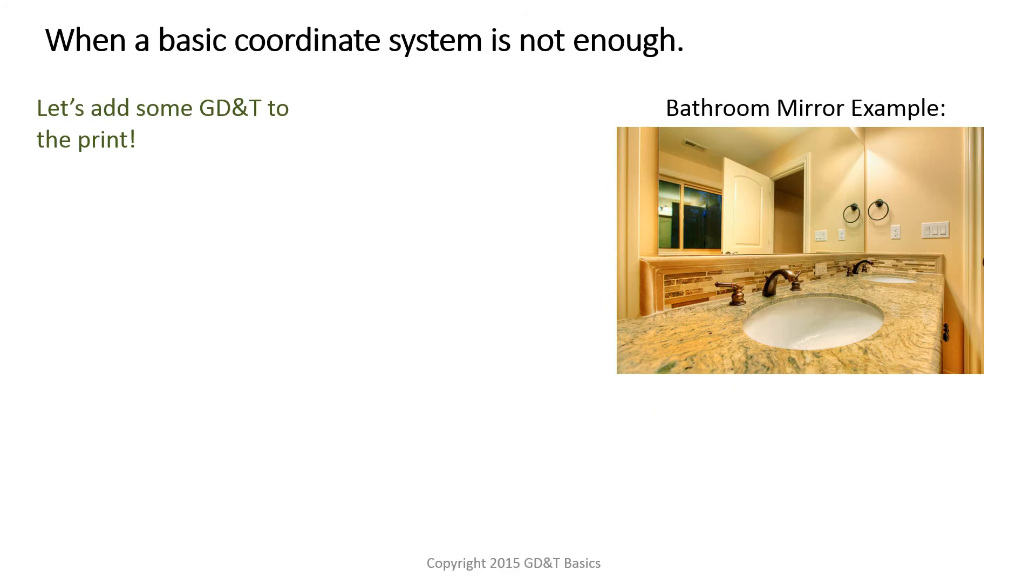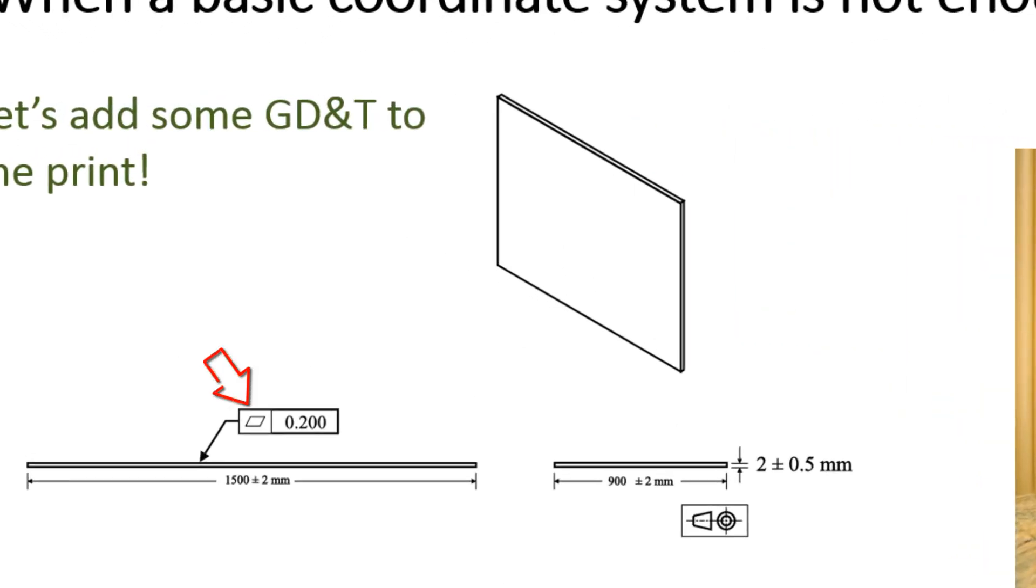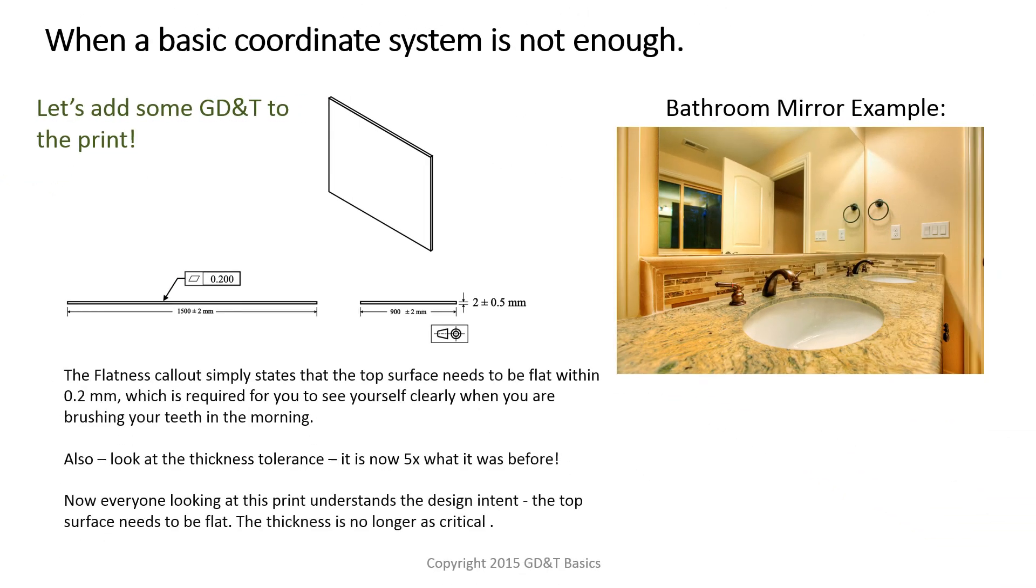To provide the design intent, let's add some GD&T to the print. You can see that flatness is called out on the surface of the part, which means that it's important to be held flat. Everything else is still dimensioned the same way. The flatness callout simply states that the top surface needs to be flat within 0.2 millimeters, which is our tested value for function.